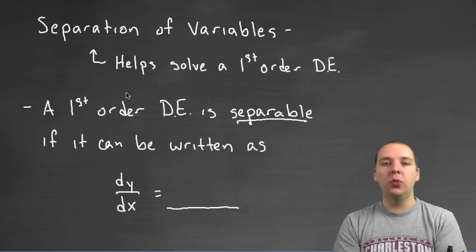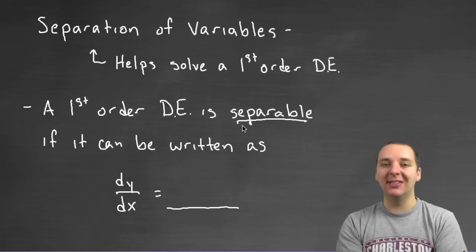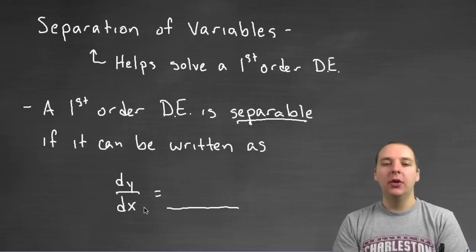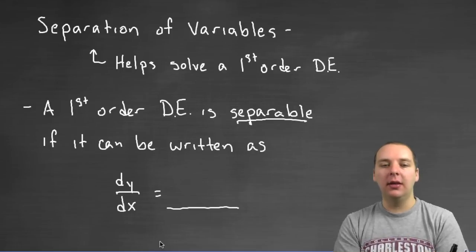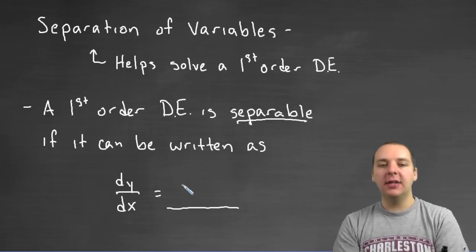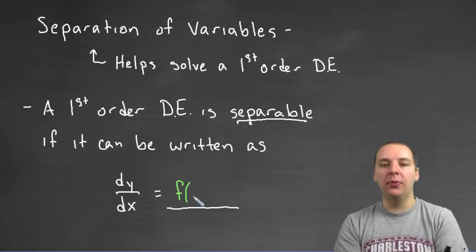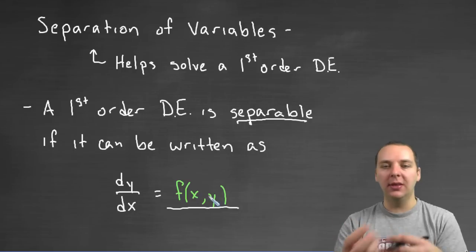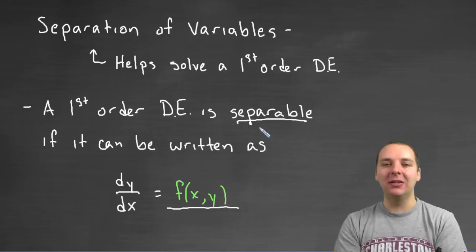So first of all, what does separable mean? Well a first order differential equation is called separable if you can write it like this. Normally you can isolate the dy/dx on the left hand side, and then you just throw everybody else on the right hand side, and it becomes a function muddled with X's and Y's. We just toss everything in a big basket on the right hand side and it becomes a function of X and Y. That's not necessarily separable.